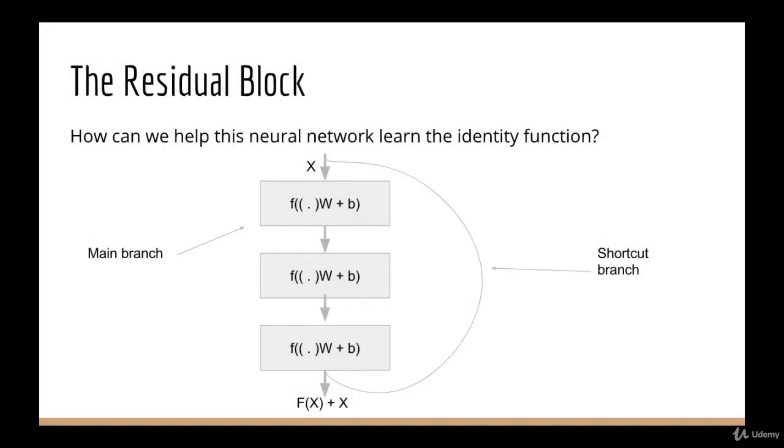So this is what is called a residual block. It consists of two paths. The first path is just a series of regular neural network layers. We call this the main branch. The second path is a direct path from the input to the output. We call this the shortcut branch. Sometimes this is called a skip connection, but we won't be using that terminology.